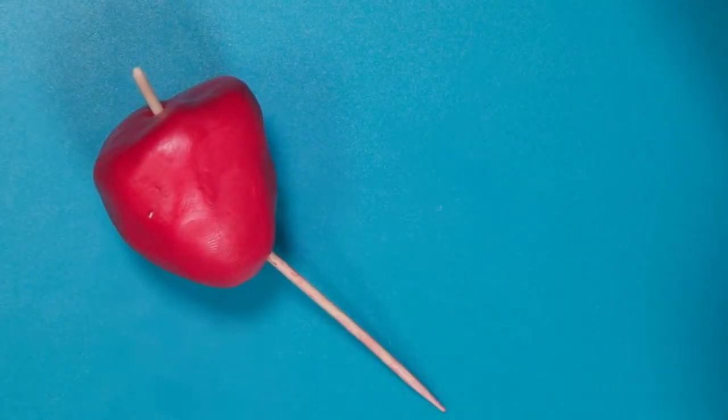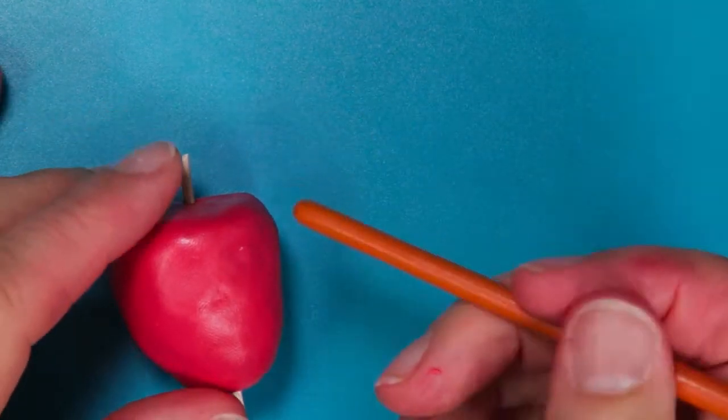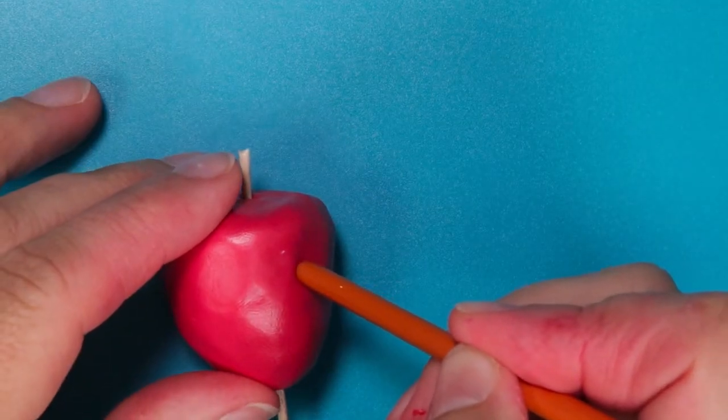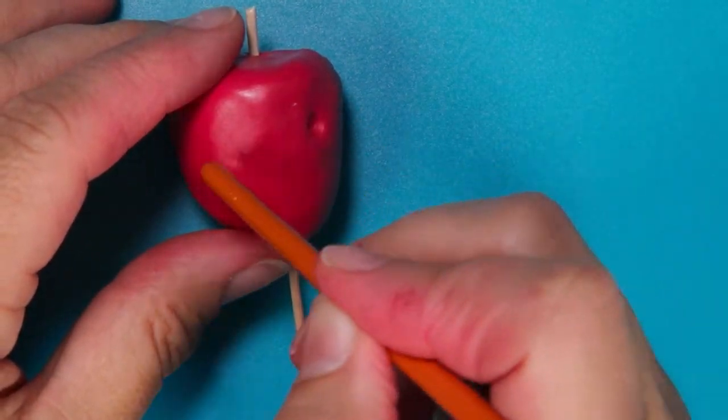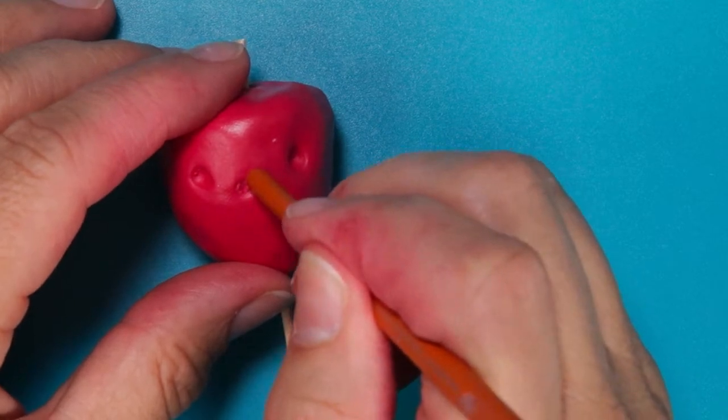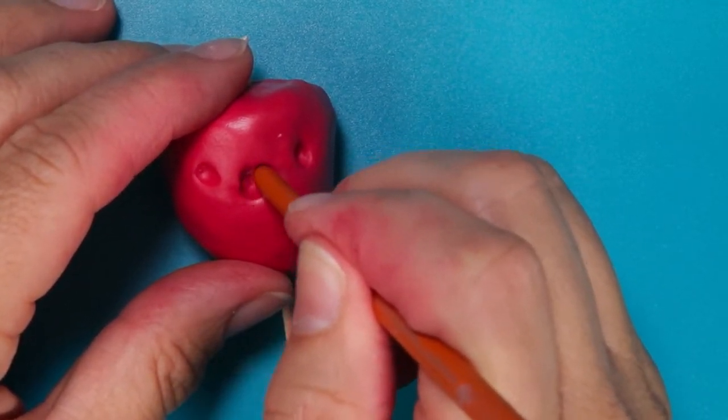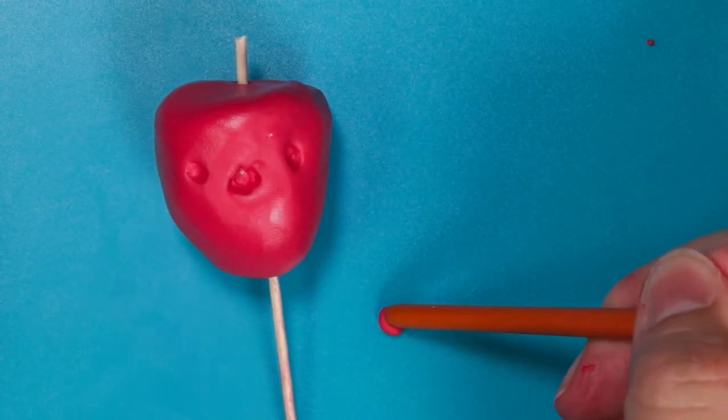Using the end part of your paintbrush, so the rounded side, make holes for where your eyes will be and then also make a hole for your mouth. You may need to add a little bit of extra clay if you find that the foil is bleeding through when you carve your mouth.